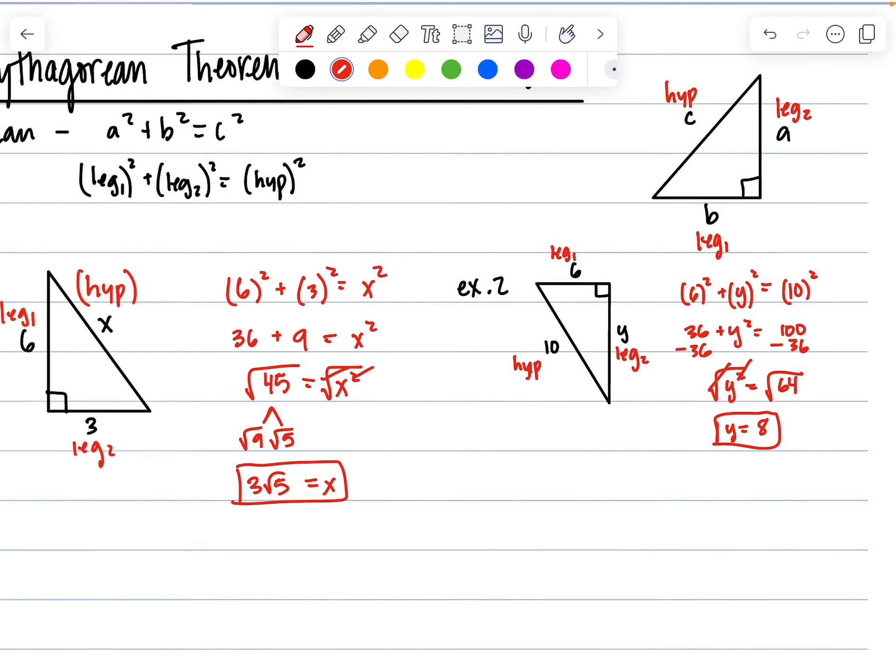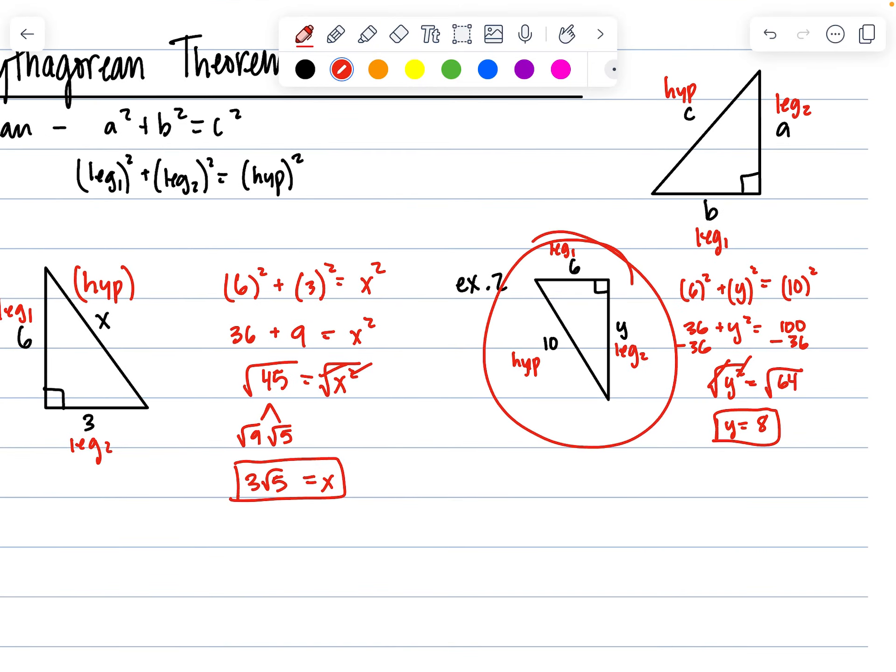Which leads me to our next mini topic. We have what we call here a Pythagorean triple, because if you notice when I put y is equal to 8, all of these numbers are whole numbers. As opposed to the first example where we have x equal to three root five. Two out of the three are whole numbers here, this last one is a simplified radical.